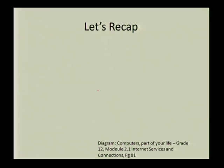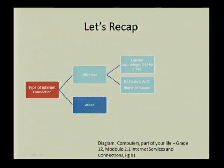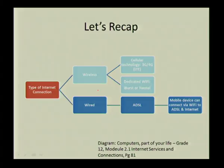To recap, there are two types of internet connections. Wireless: cellular technology such as 3G or 4G LTE, and dedicated Wi-Fi supplied through iBurst or Neotel. Wired: ADSL, and you can use your mobile device to connect via Wi-Fi to the ADSL and internet. That's the end of our lesson on network technologies. Thank you, grade 12s. Goodbye.